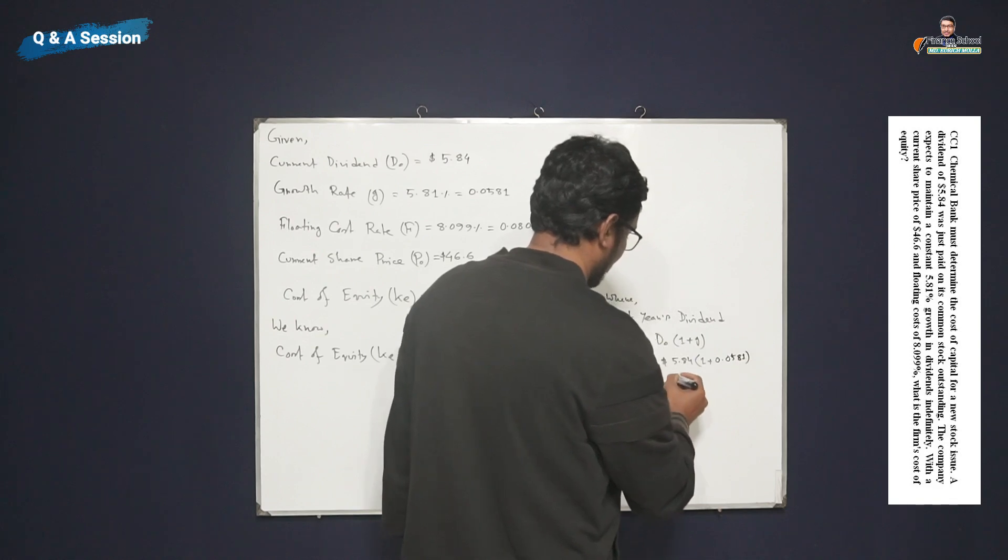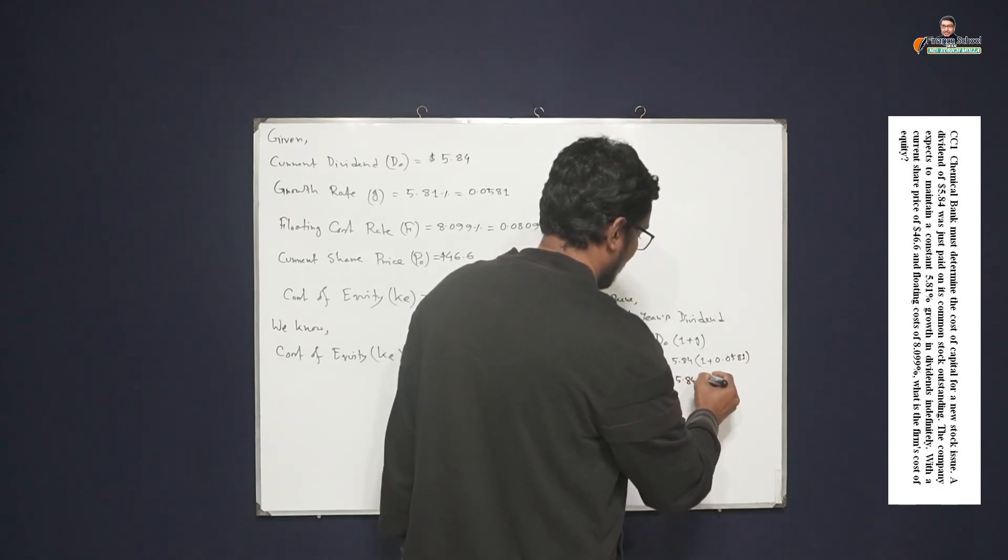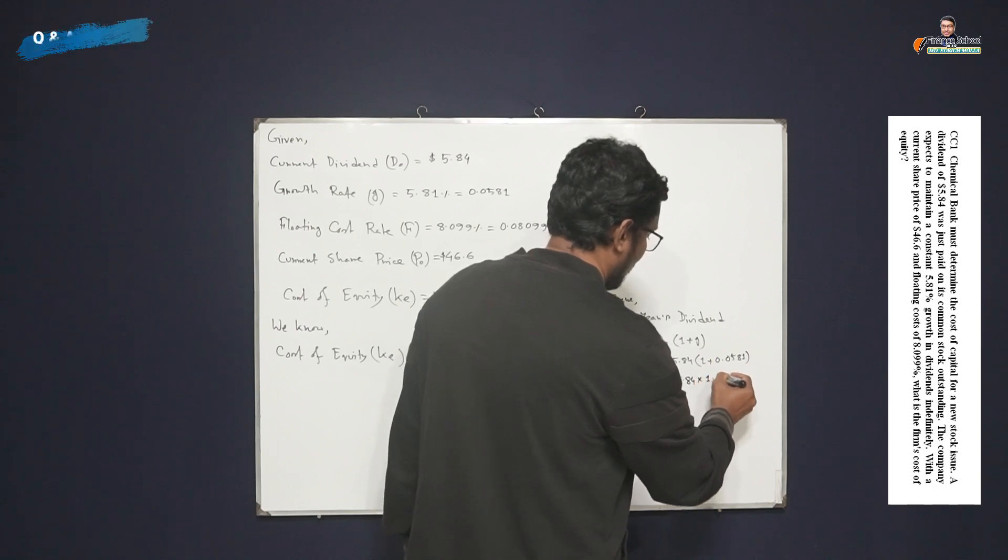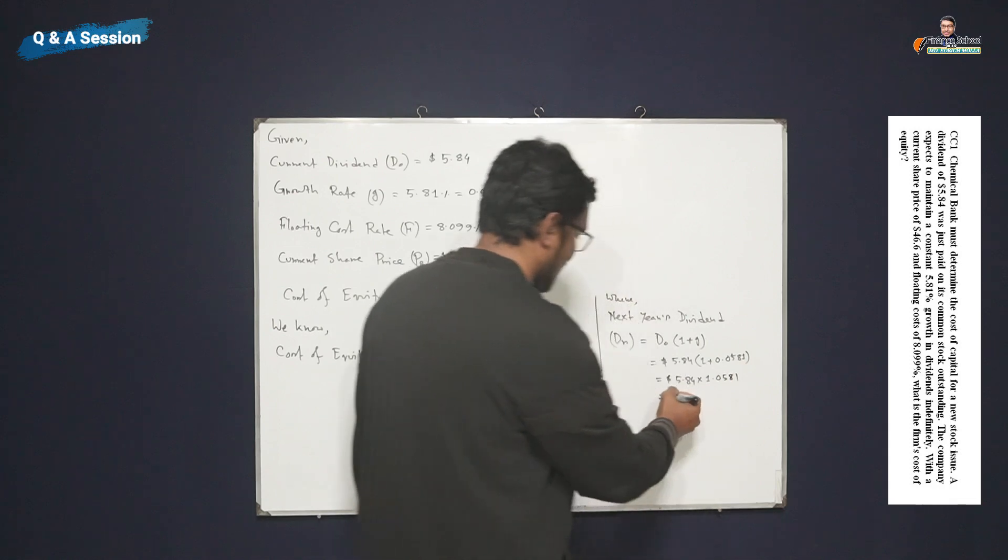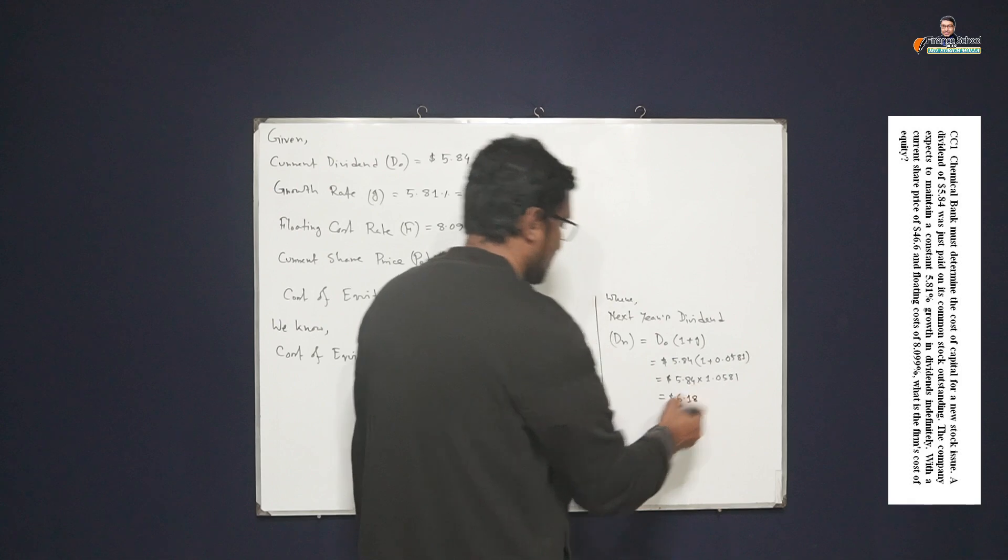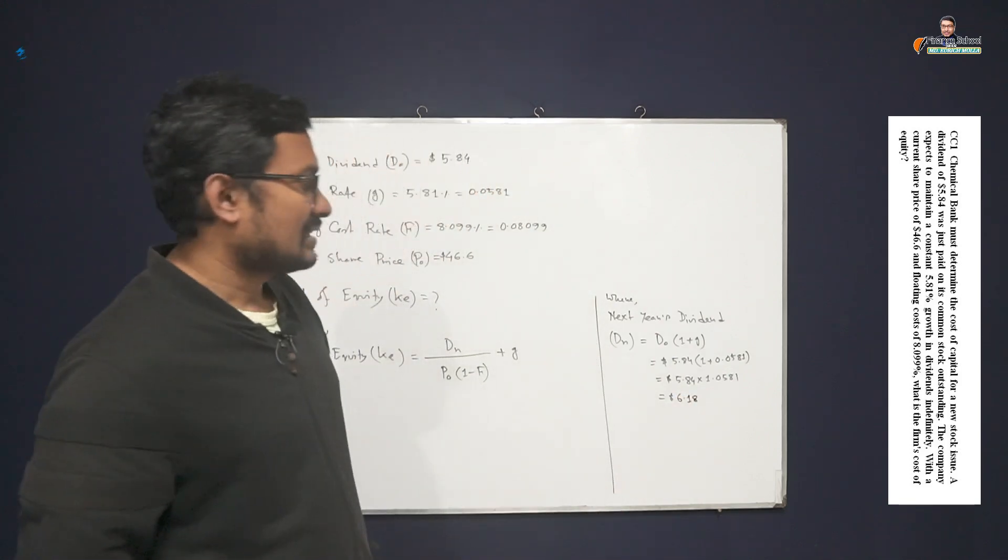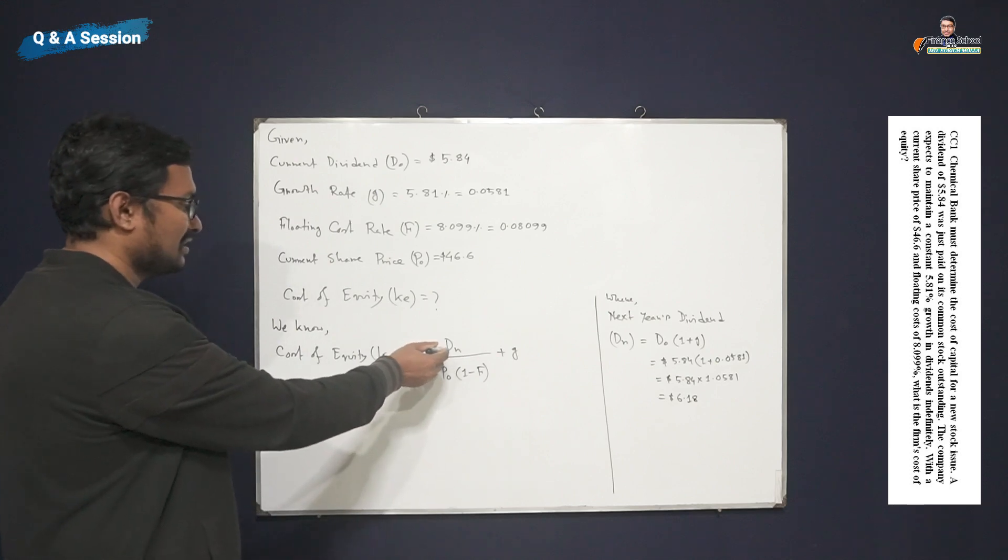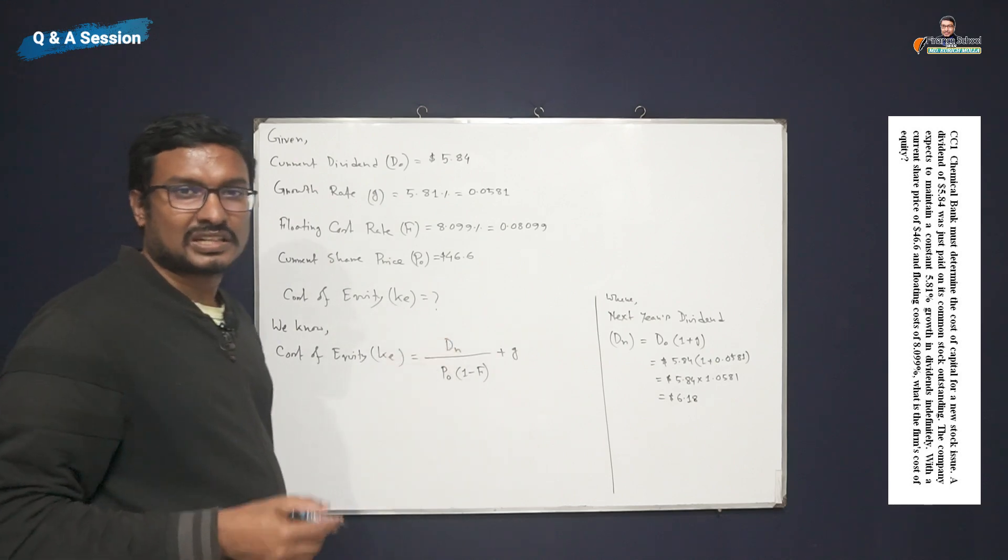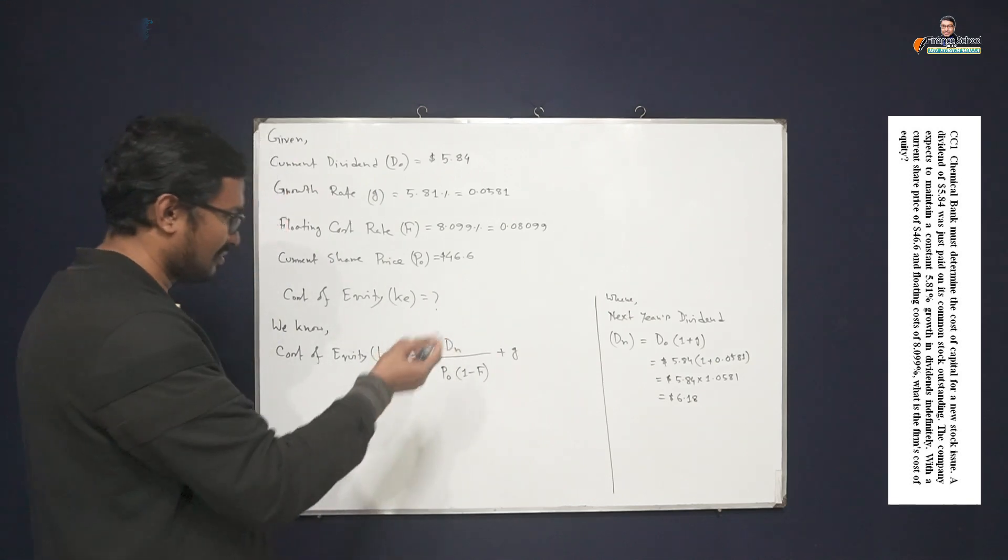So here 5.84 times 1.0581. If we multiply, then we can write here the amount of $6.18. So $6.18 should be the next year's dividend or D₁.